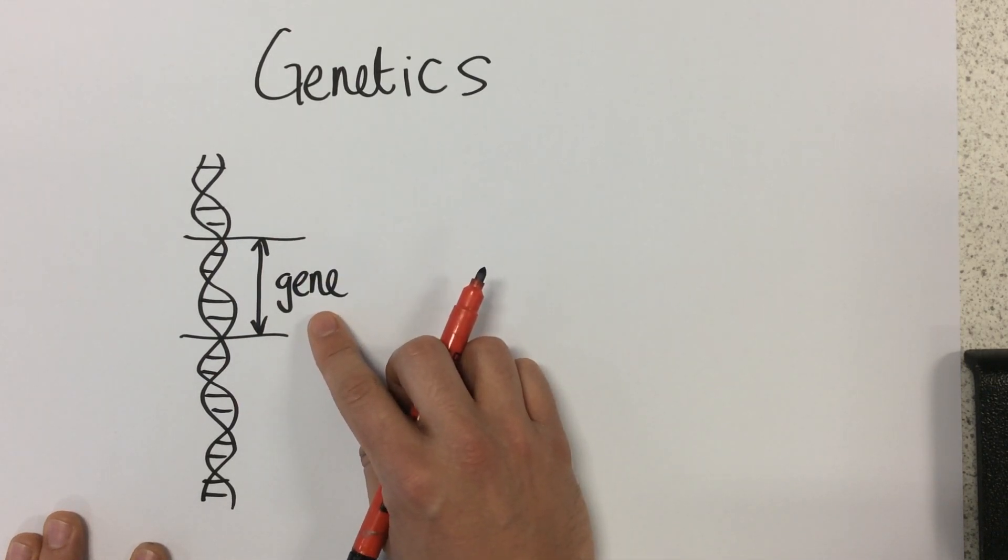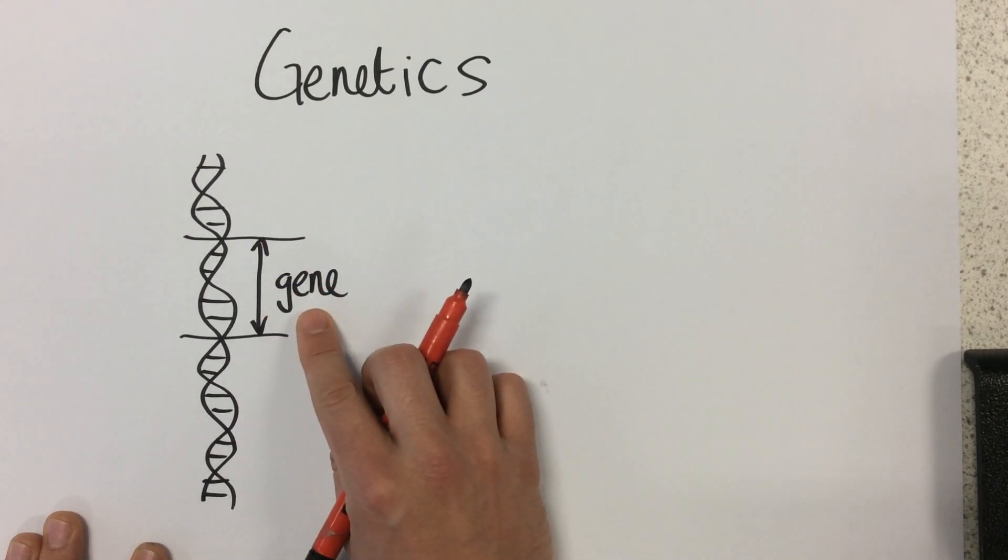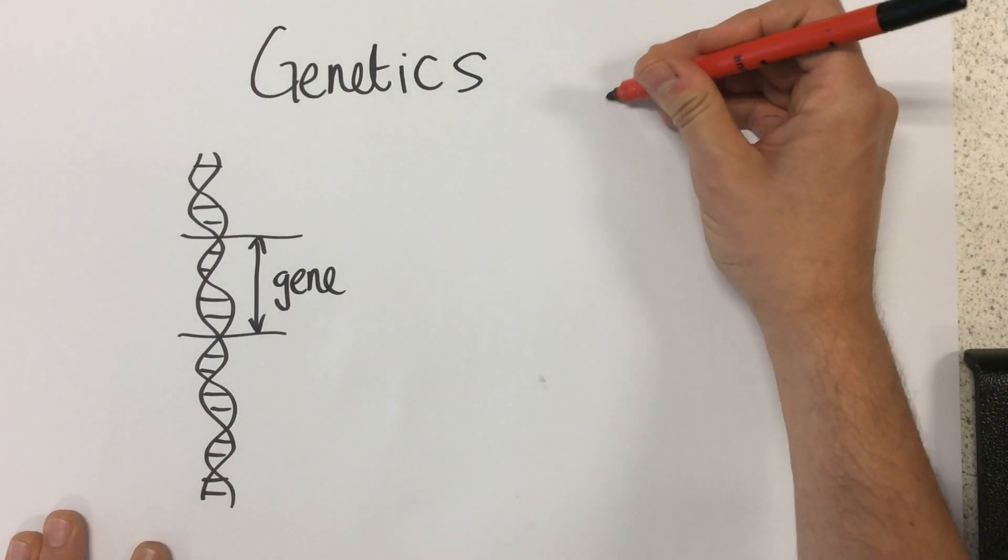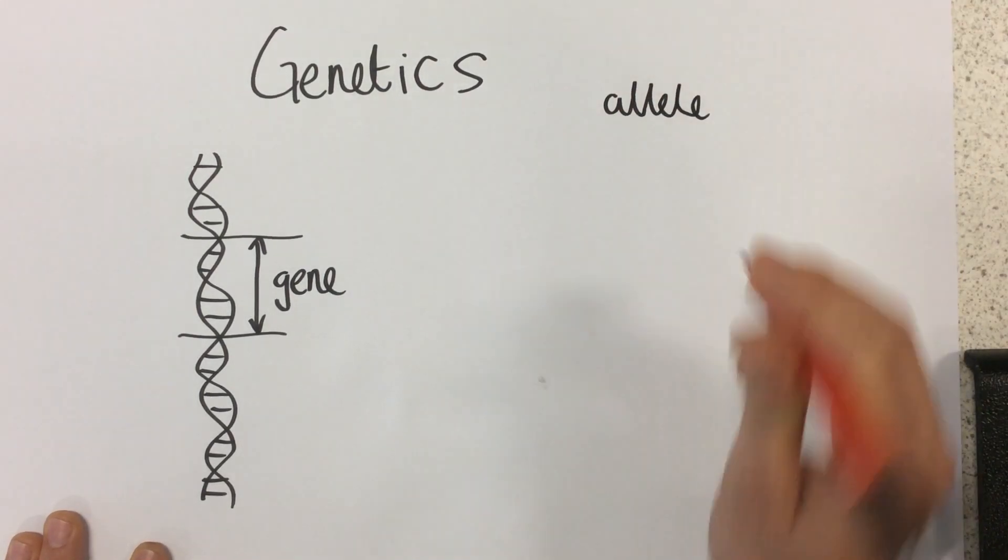Now you inherit your genes from your mother and your father. And so you'll have one gene about, let's say, eye color from one parent, and another gene about eye color from another parent. So these are different versions of the same gene, also known as alleles.